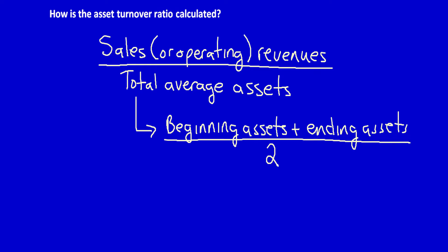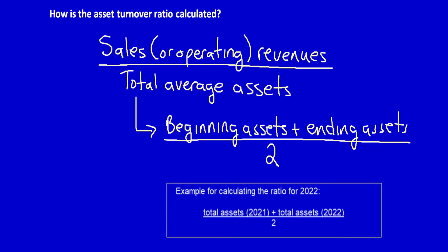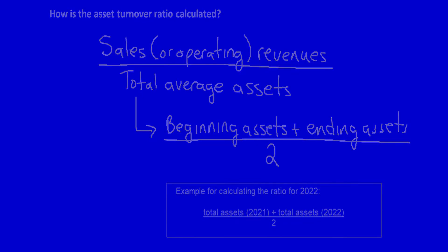If I'm calculating this ratio for 2022, I would take the total assets from 2021, which are the beginning assets for 2022, add in the total assets for 2022, and divide by 2. That would give me the total average assets.